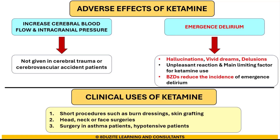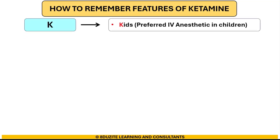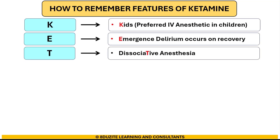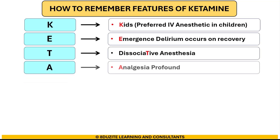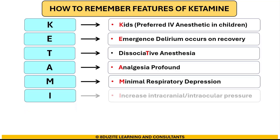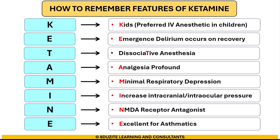To remember all this information, we have a trick using the letters of the word KETAMINE. K stands for Kids — it is the preferred IV anesthetic in children. E stands for Emergence delirium on recovery. T stands for dissociative anesthesia. A stands for profound Analgesia. M stands for Minimal respiratory depression. I stands for Increase in intracranial or intraocular pressure. N stands for NMDA receptor antagonist. And E stands for Excellence in asthmatic patients.